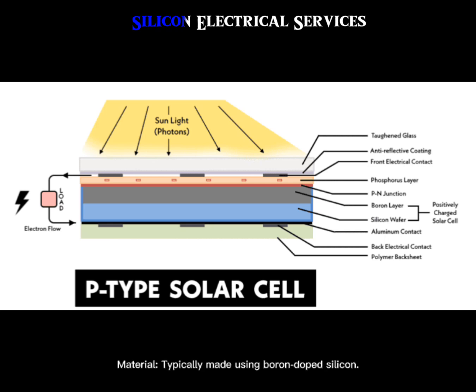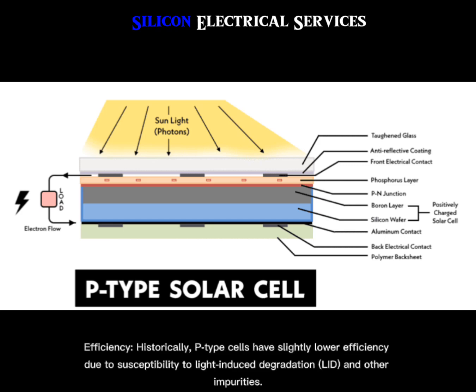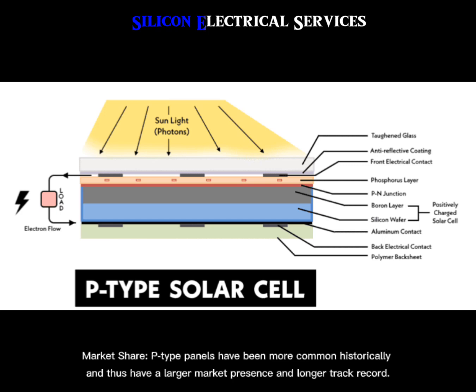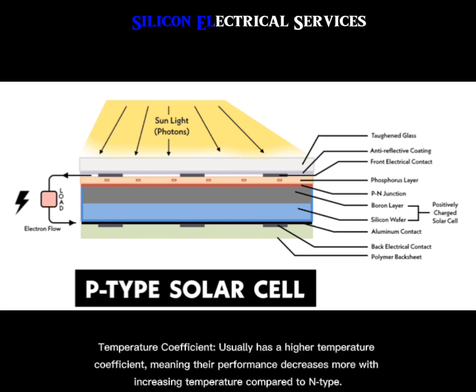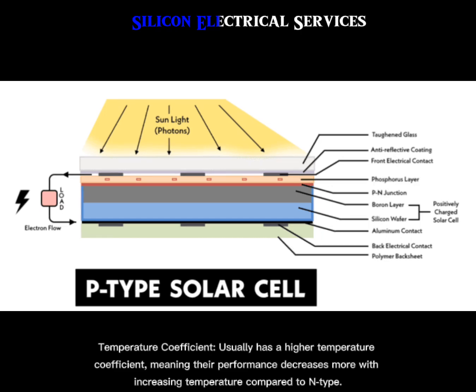P-Type solar panels. Material: typically made using boron-doped silicon. Cost: generally less expensive to produce. Efficiency: historically, P-Type cells have slightly lower efficiency due to susceptibility to light-induced degradation (LID) and other impurities. Market share: P-Type panels have been more common historically and thus have a larger market presence and longer track record. Temperature coefficient: usually has a higher temperature coefficient, meaning their performance decreases more with increasing temperature compared to N-Type.